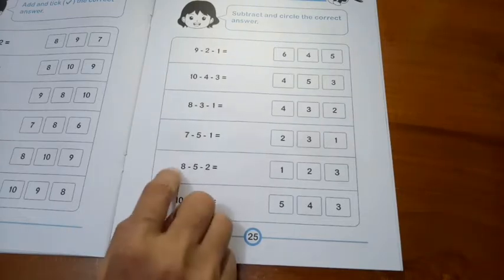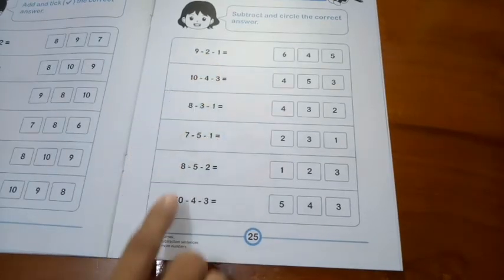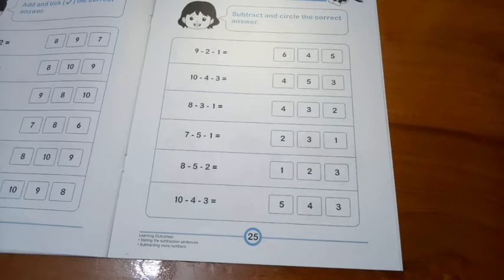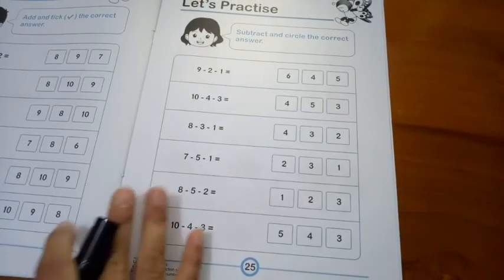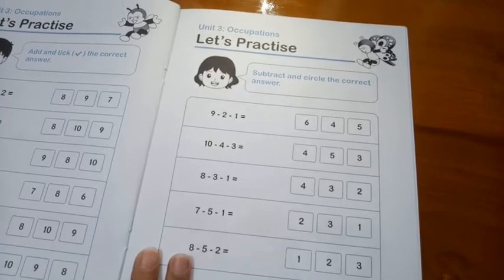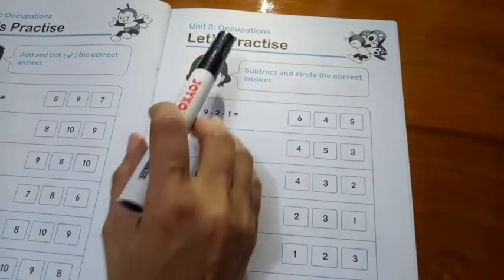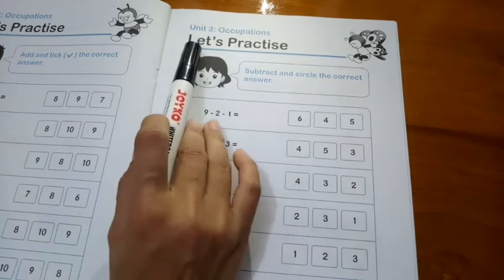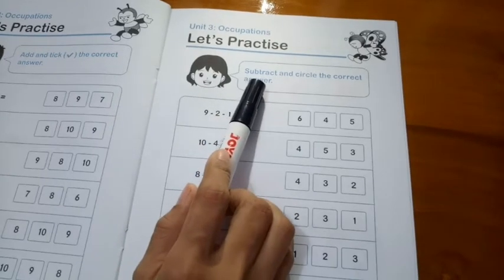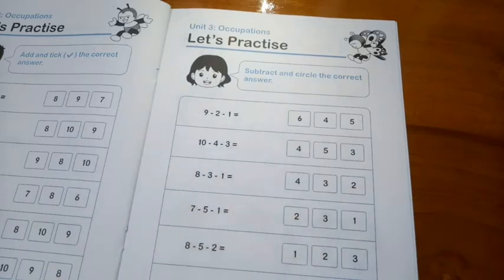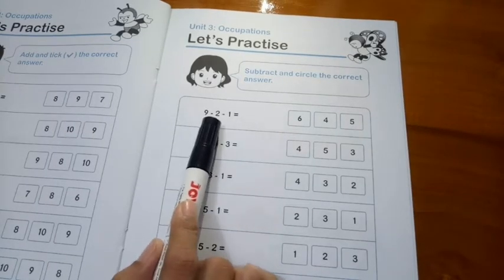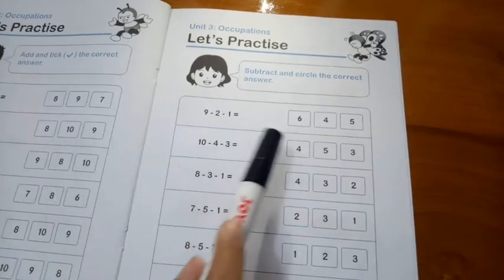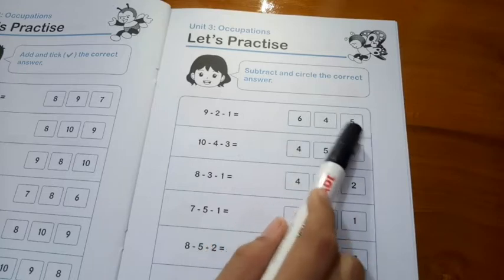As usual, we always use two numbers to do the subtraction but now we want to do the subtraction with more numbers. Let's read together: Let's practice. Subtract and circle the correct answer. You have to find the answer of this subtraction and circle which one is the correct answer.